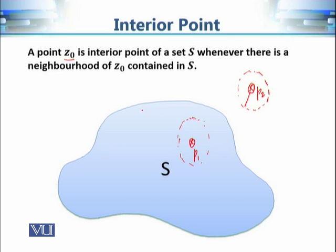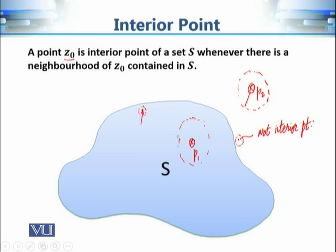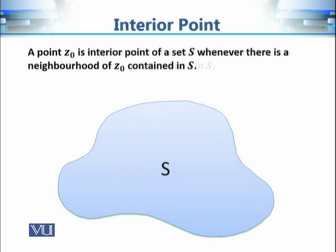Precisely, z₀ is an interior point of S whenever there exists a neighborhood of z₀ that is contained in S. We can take a point very close to the boundary of S and still find a very small disk centered at that point which is contained in S. However, for a point at the boundary, even a very small disk will not be entirely contained in S, so that point is not an interior point.